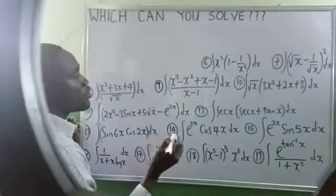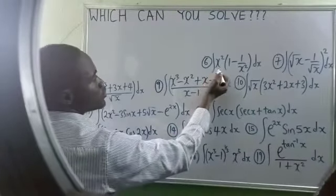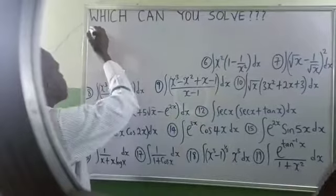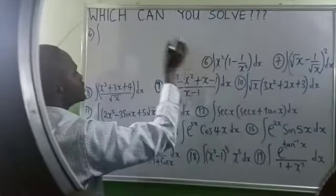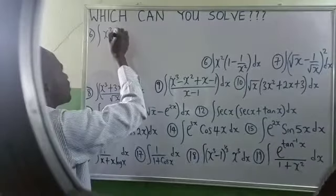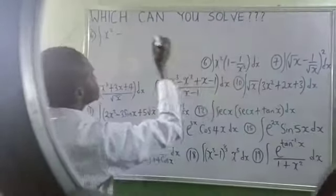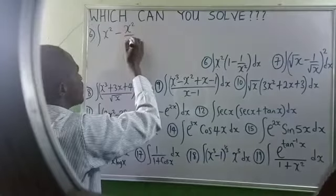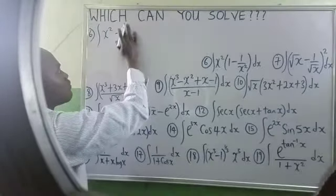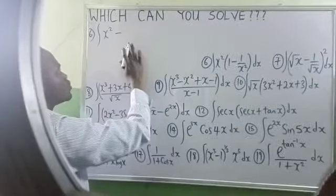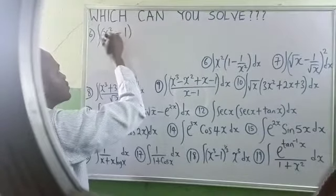To solve question number 6, please let's open the bracket first. You have that integration of x squared minus x squared over x squared. x squared over x squared will give you 1, so everything will be minus 1 dx.